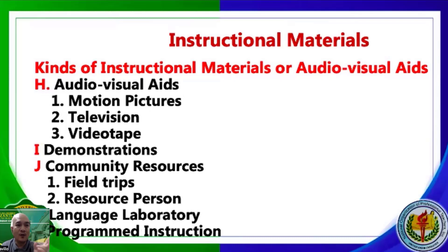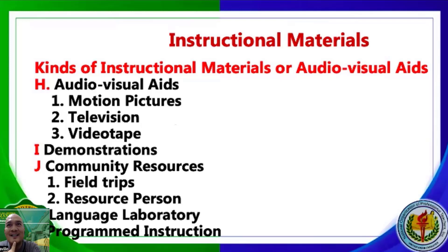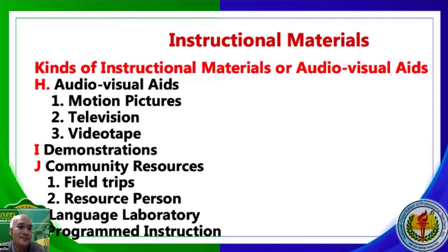Audiovisual materials are combinations of audio and visual — motion pictures, television, videotape, and YouTube. YouTube is a good source of audiovisual aids, including National Geographic files. Demonstration is also an instructional material — especially when you lack materials, go to the chemistry lab and demonstrate the mixing of chemicals. You can also invite resource persons to demonstrate particular procedures, and community resources including field trips.